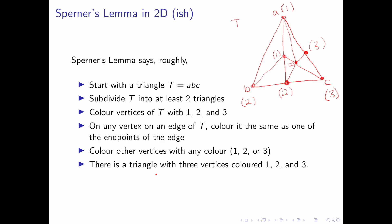This is called a Sperner coloring of the triangle T. Sperner's Lemma states that there is a triangle with three vertices colored 1, 2 and 3. In this example here, that triangle is this one. This is a triangle with vertices colored 1, 2 and 3.